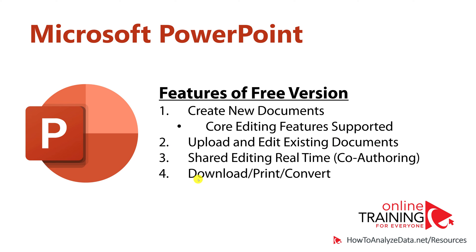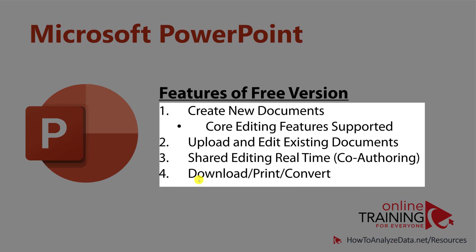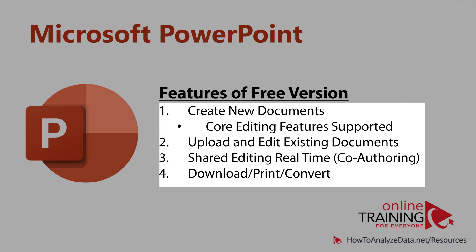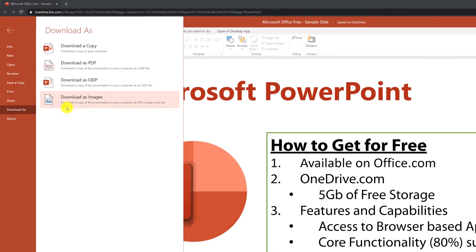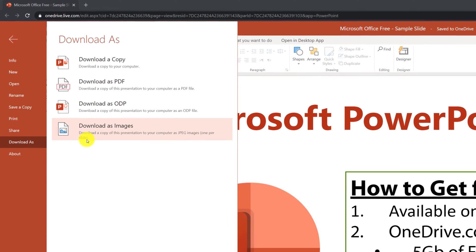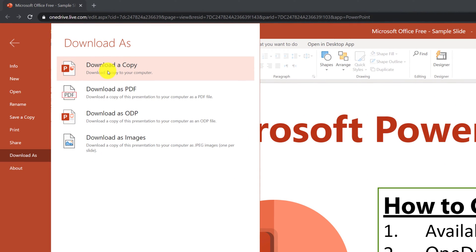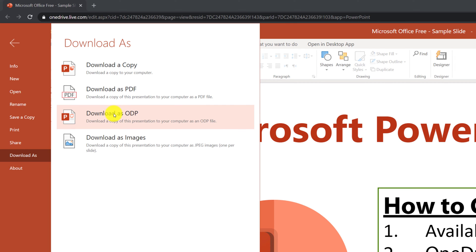In addition to being able to create and edit PowerPoint presentations, you can also download, print, and convert documents in various formats. The Save As option in the File menu on the ribbon allows you to download a copy in PPTX format, as well as download a PDF file, ODP format, or download every slide as an image.